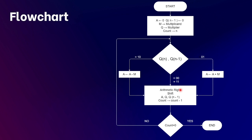We decrease the value of count by one. If Q zero and Q minus one are 0,1 that indicates the end of the sequence and we store the sum of the accumulator and multiplicand into the accumulator. If Q zero and Q minus one are 1,0, which indicates the beginning of a sequence of ones, we store the result of subtracting the multiplicand from the accumulator. After this we perform an arithmetic right shift on accumulator, Q, and Q minus one. We repeat this process until the count becomes zero.